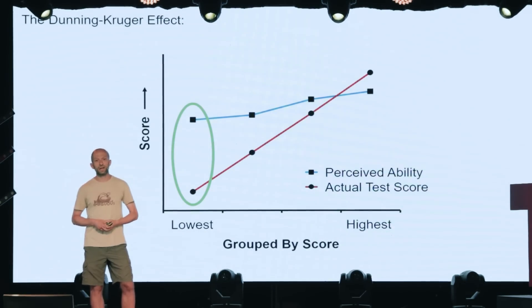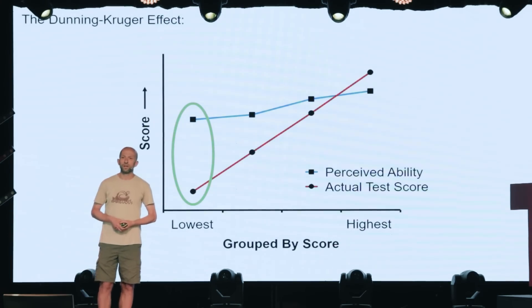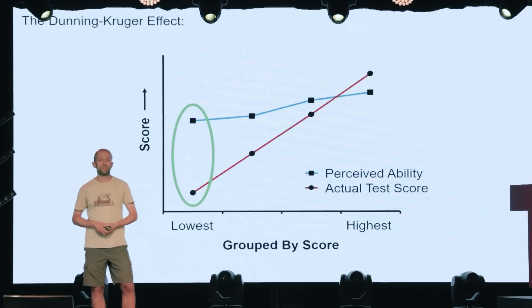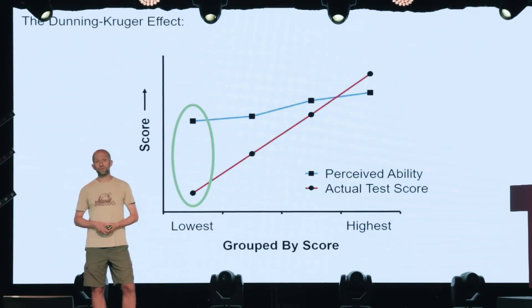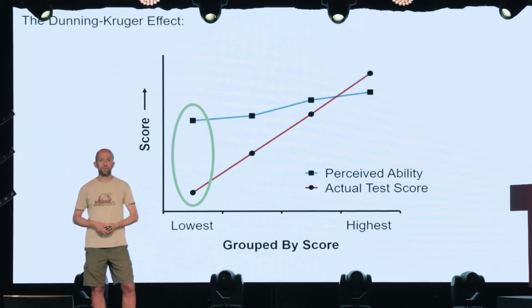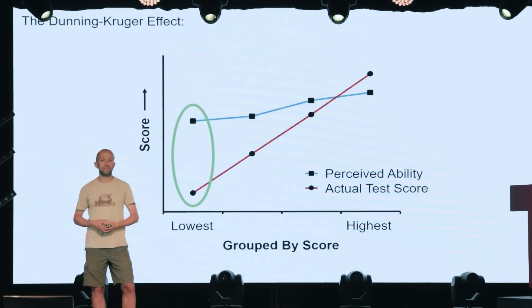So, if I'm poor at a task, I also lack the metacognitive insight to accurately assess my ability. Now, this pattern's been seen again and again across a number of domains, from driving skill to exam taking, even chess playing. However, in recent years, a number of criticisms have been leveled at this approach, and we now have reason to believe that this pattern results is virtually unavoidable.